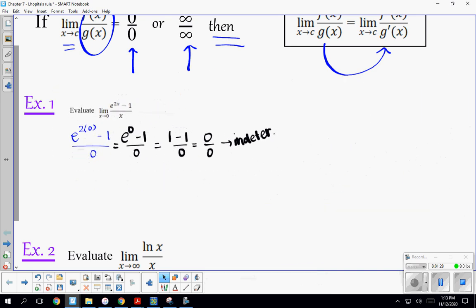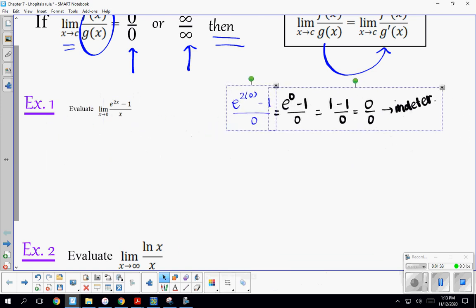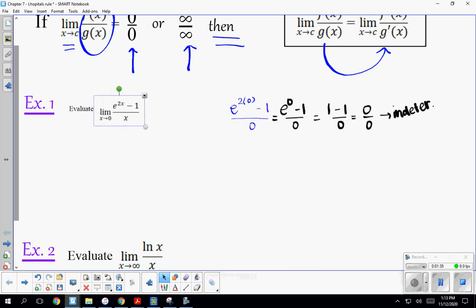You do have to show this piece here. Then what we're going to do is instead of using the original, we're going to take the derivative of both the top and the bottom, and we're going to find the limit of that function instead.